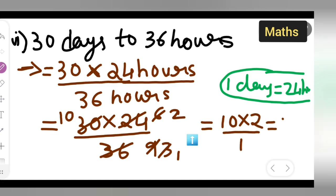So we get 20 over 1. The final answer written as a ratio is 20:1.